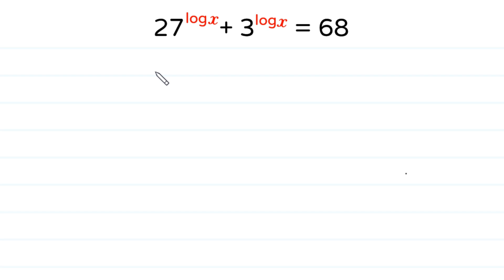Hello, welcome to how to solve this logarithmic equation. 27 to the power log x plus 3 to the power log x is equal to 68.